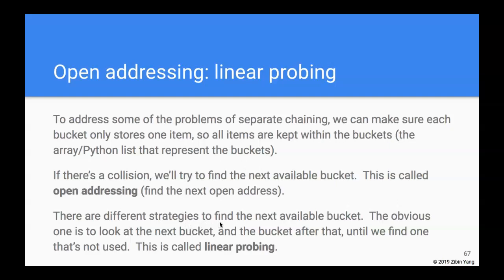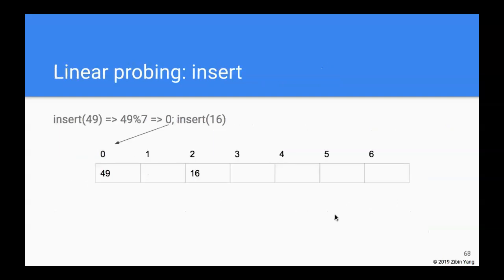In order to find the next available bucket there are different ways to do that. The most obvious one is to look at the bucket next to the current bucket, then the next, and so on until you find one that is not used. This strategy is called linear probing. Let's look at how this works with some examples.